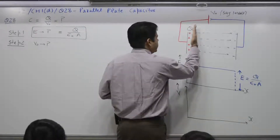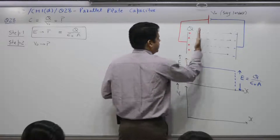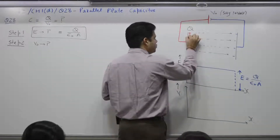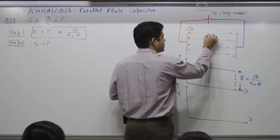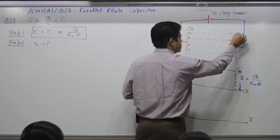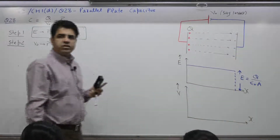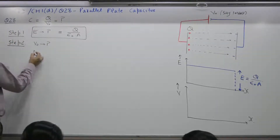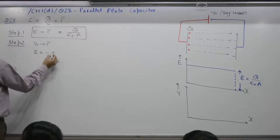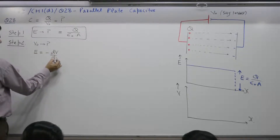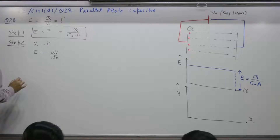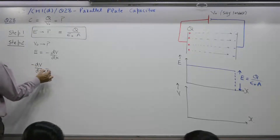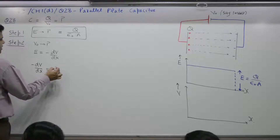All the points in the next plane will be at 9 volt, then 8 volt. As you move across: 10, 9, 8, 7, 6, 5, 4, 3, 2, 1, 0. This is how the potential will vary. The relationship between E and V is: E equals minus dV by dx. E is a constant, so minus dV by dx equals E, a positive constant. Therefore dV by dx is a constant with a negative sign.